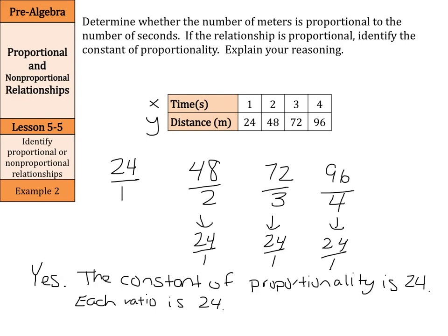In non-proportional relationships, like our first example, the ratios were different. In the second example here, our ratios were all the same. So, it is a proportional relationship. Our constant of proportionality is the 24.